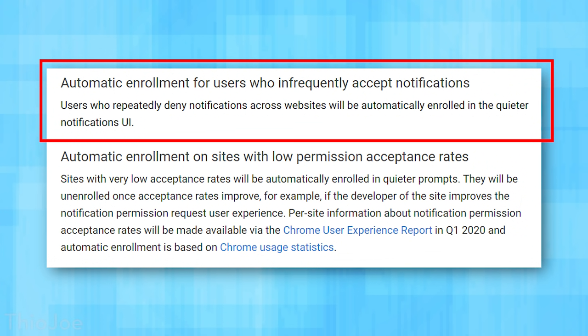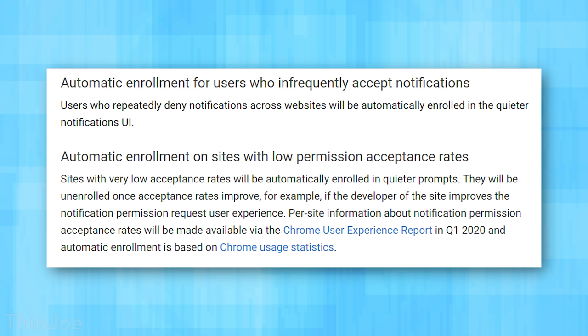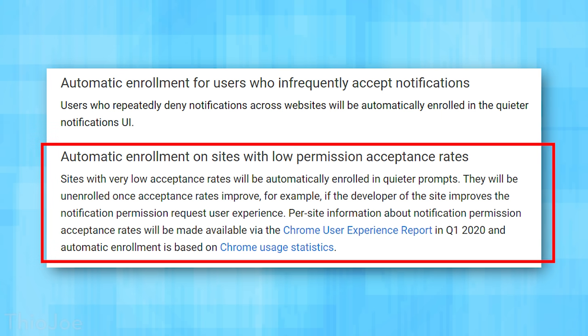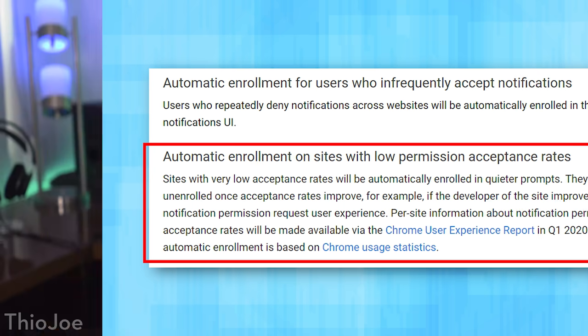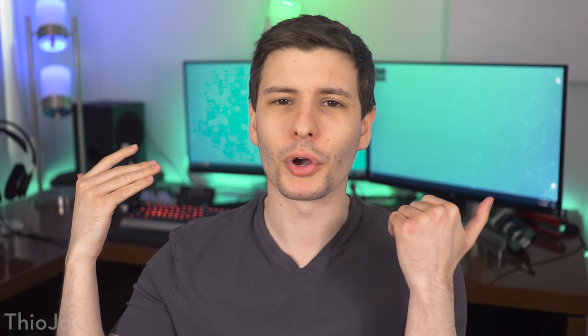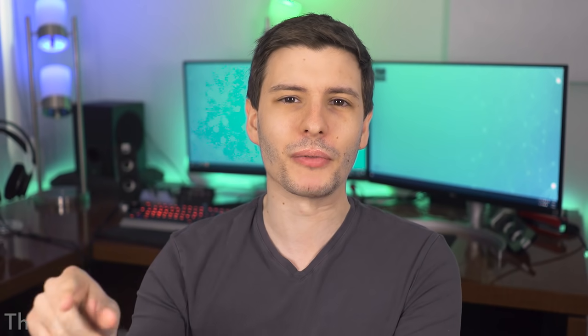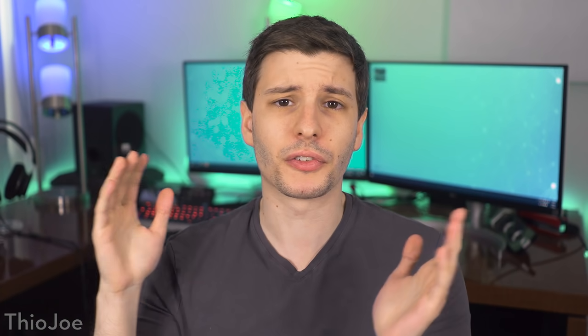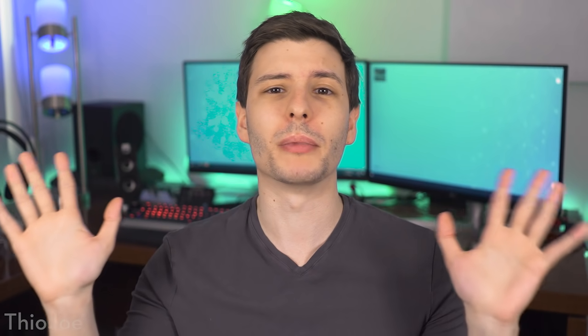The first condition is if you as a user very frequently block notification requests — like if every time you see one of these requests you always deny it, it will stop them from popping up in the future. Also, if a particular website has a very low enabling rate of notifications and they pop up a request with a very low opt-in rate, it might just start blocking those requests for everybody. So hopefully going forward you're going to see a lot fewer of these requests.